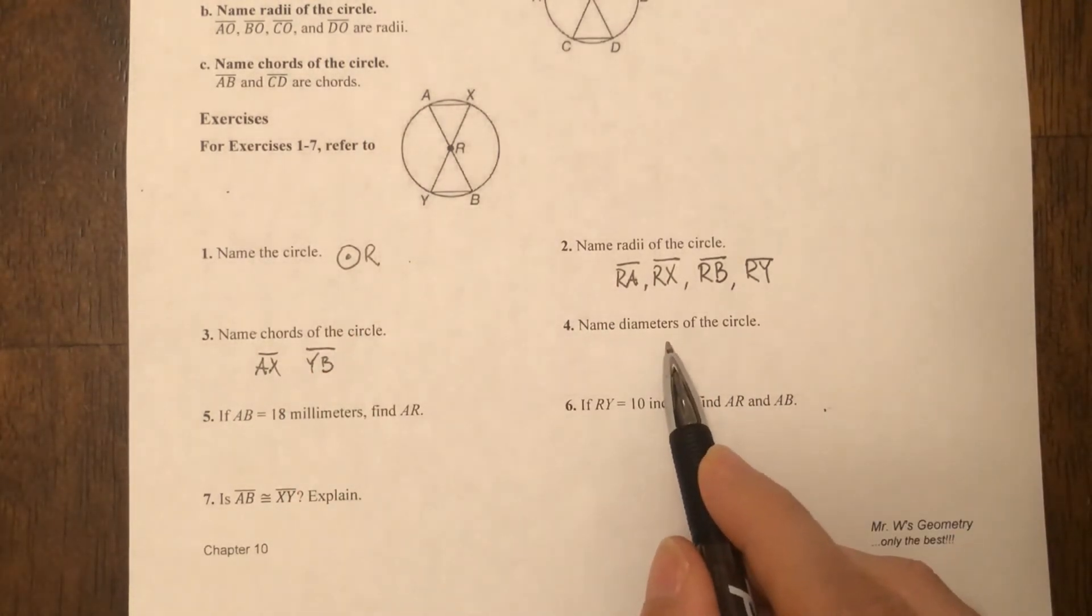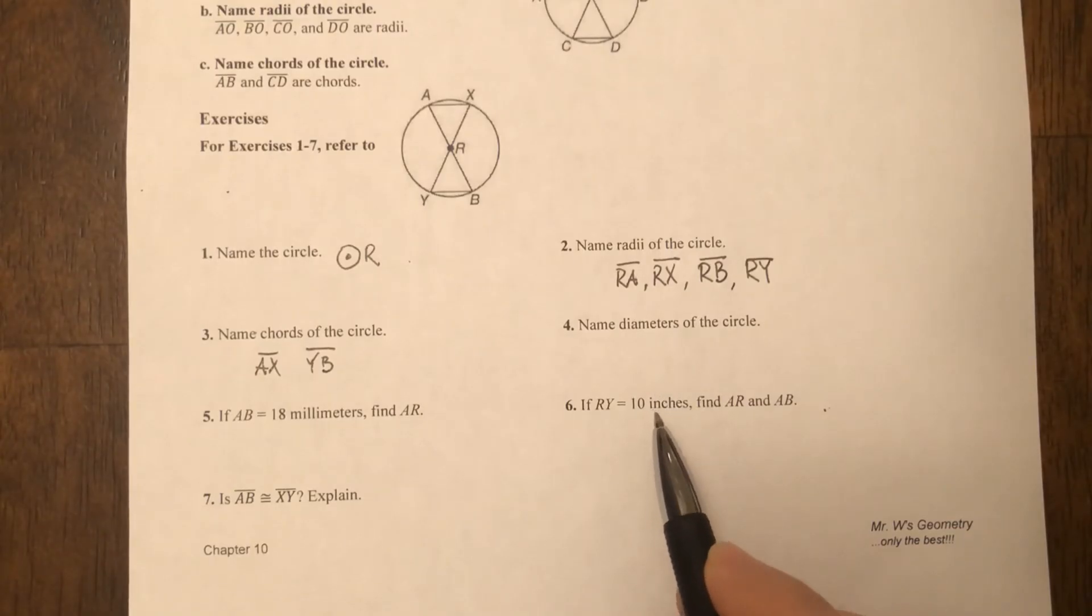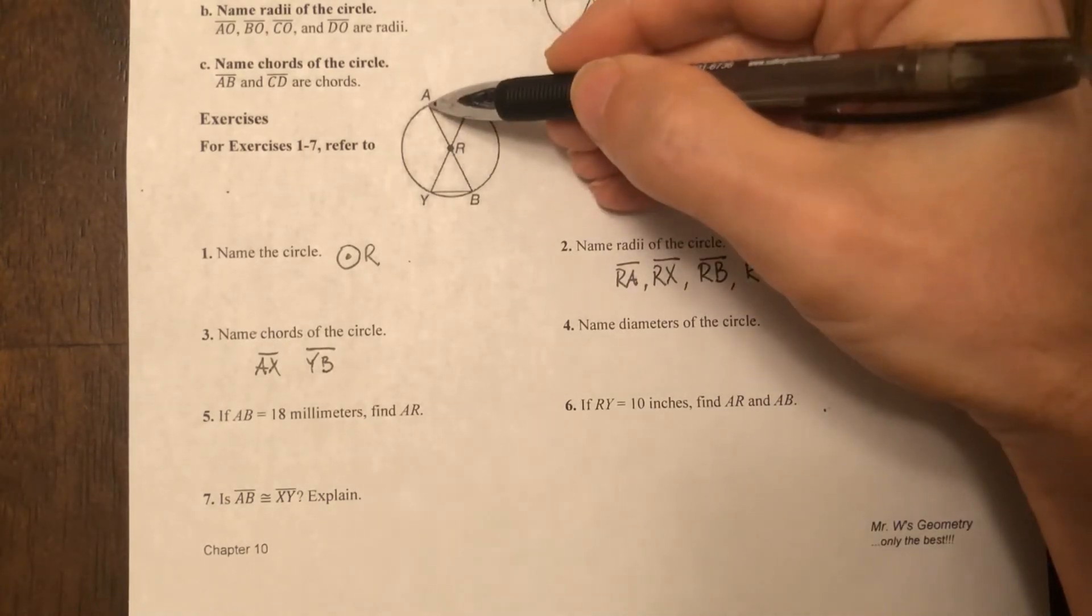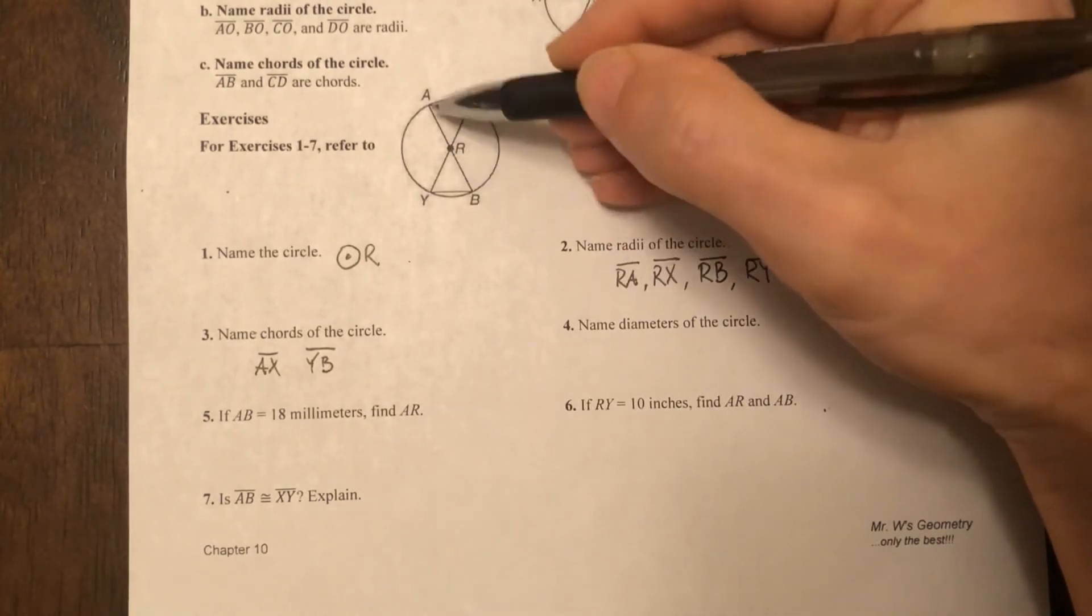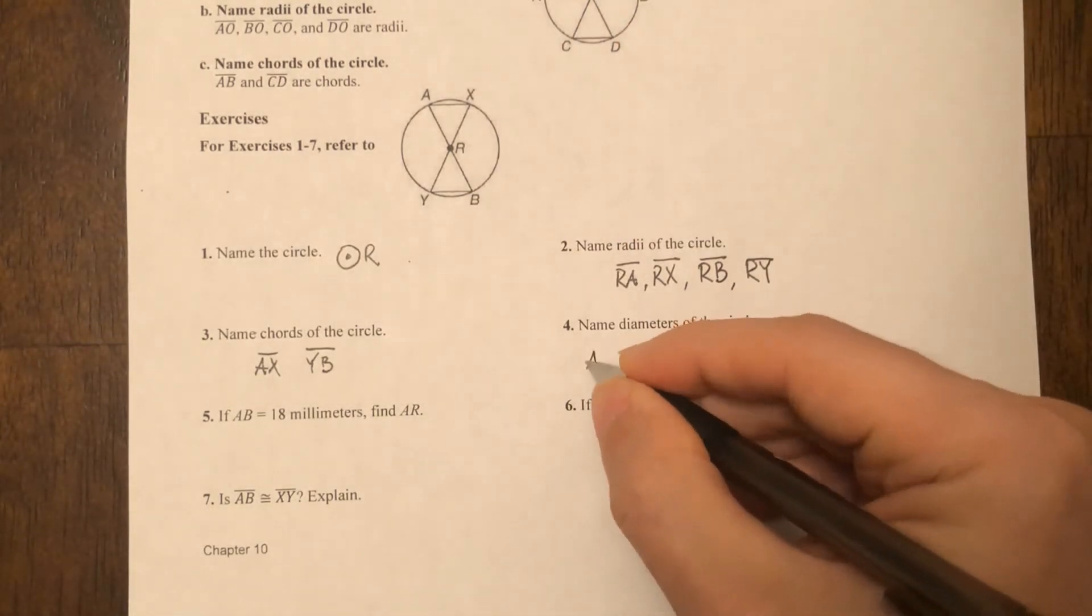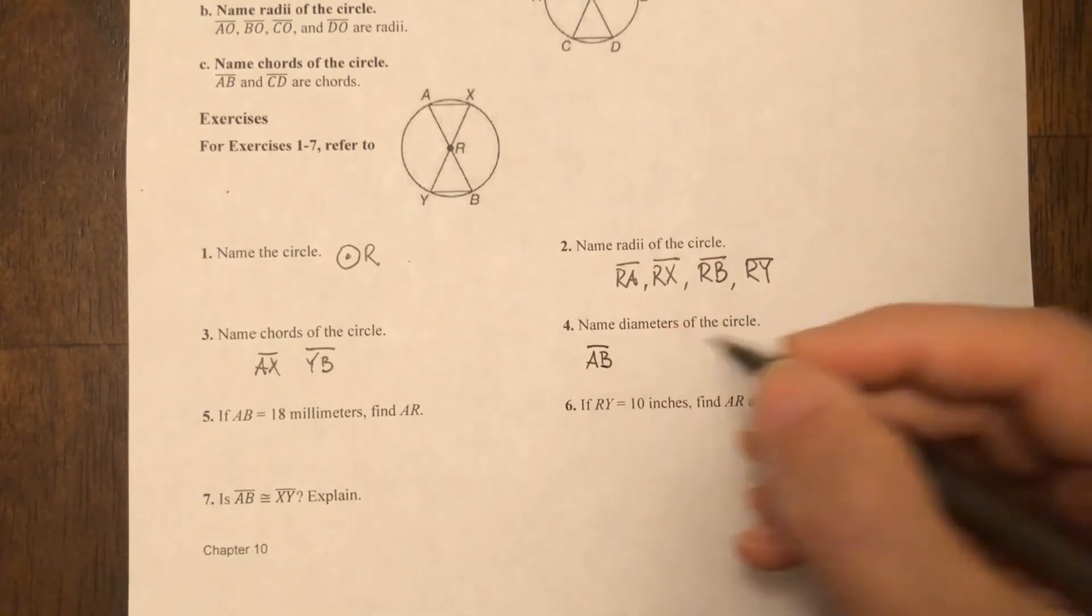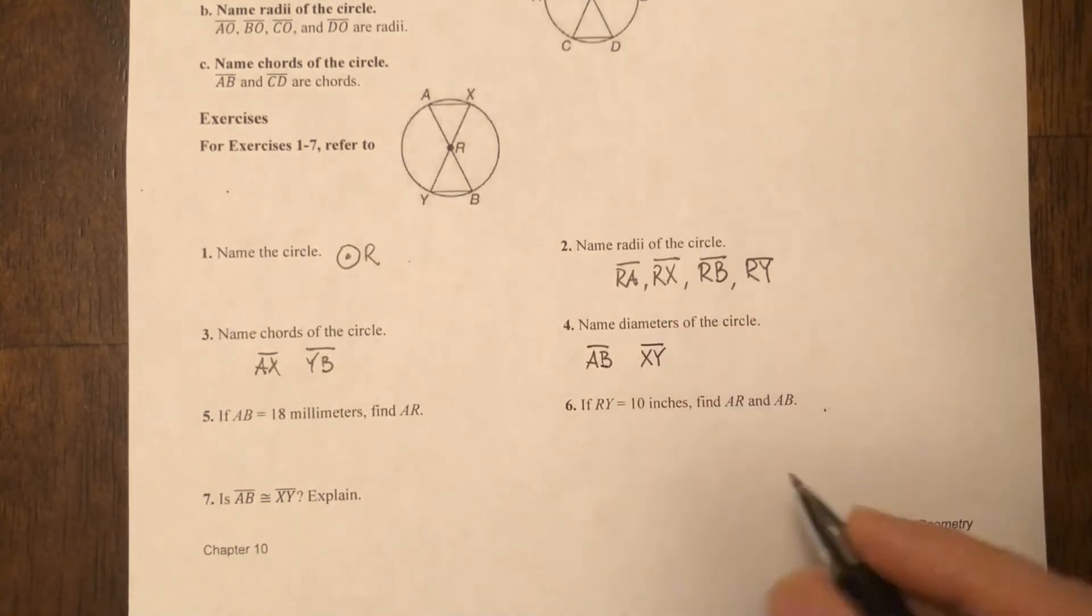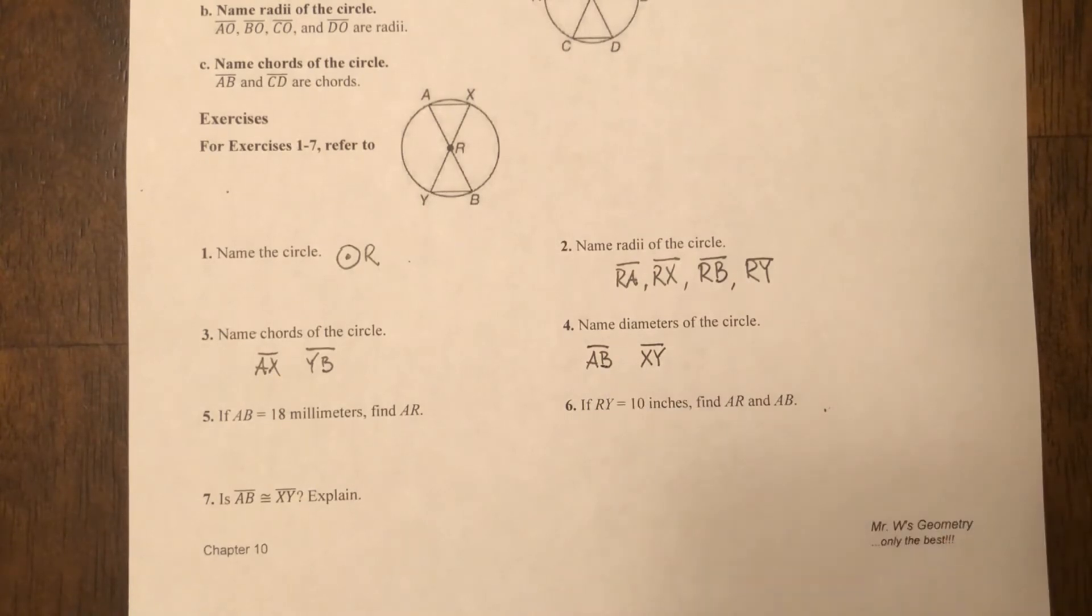Now the diameters—when it says name the diameters of the circle, these are also chords but remember, it's a special type of chord. It's a chord that goes through the center. It's gonna go from one spot on the circle to the other, but it has to pass through the center. So I've got AB and I've got XY. You can put those letters the other way if you want to: YX and BA. It doesn't matter.